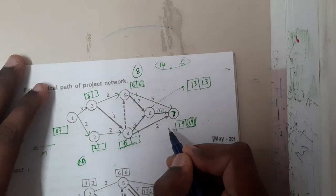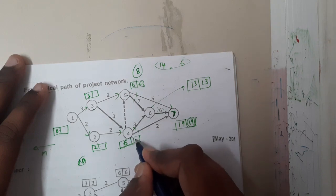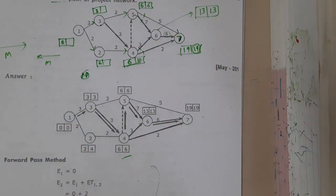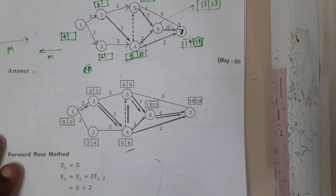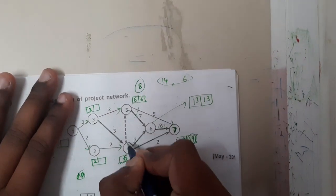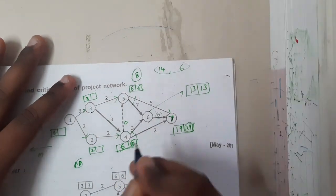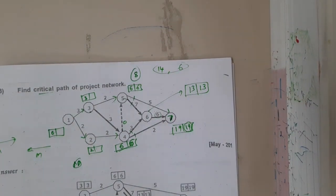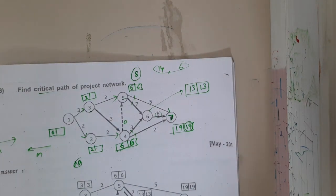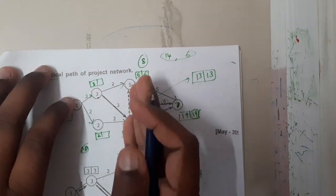I thought there might be a mistake since thirteen minus three gives ten but the value showed six. After cross-checking, I realized there is also an outgoing dummy activity with cost zero, so six minus zero is six — the minimum is six, which is absolutely correct. Please consider dummy activities as well; those are not dead nodes, they are dummy activities and you must consider them in your calculations.